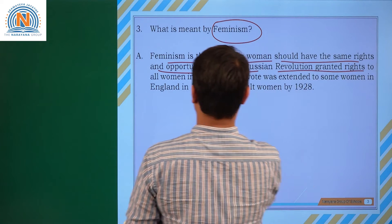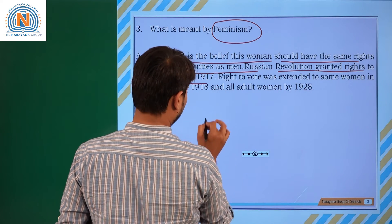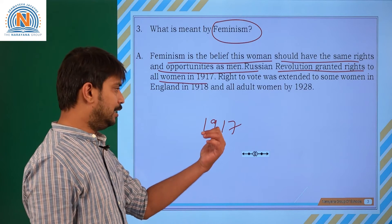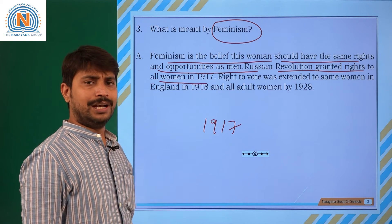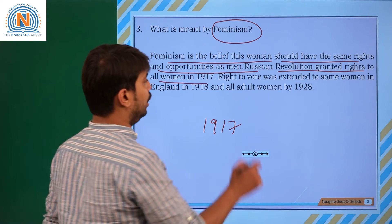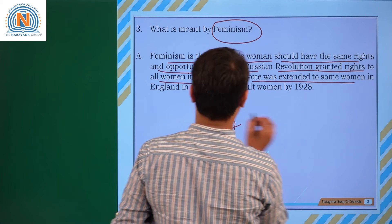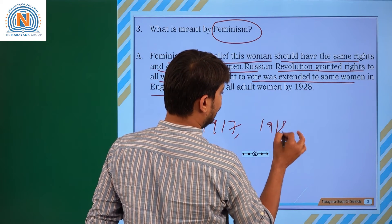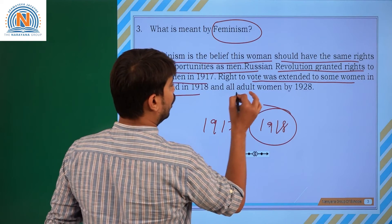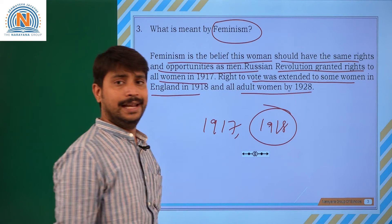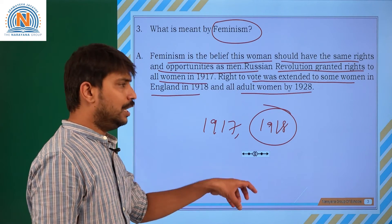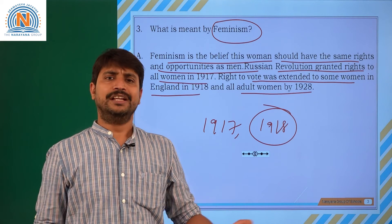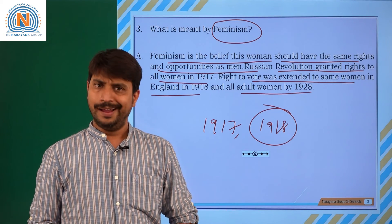The Russian Revolution granted rights to women in 1917. After the Russian Revolution, equal rights were granted to women. The right to vote was also extended to some women in England in 1918. Because of that, women are going to be treated with equal opportunities, and all are going to be benefited a lot.